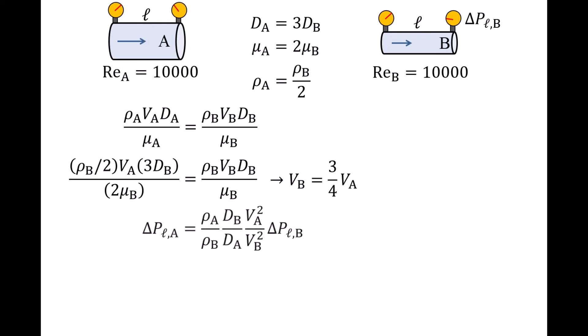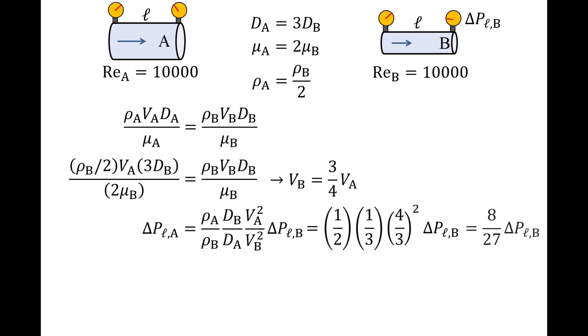Returning to our equation relating the pressure drop per length in both pipes: the ratio of rho A to rho B is one-half, the ratio of dB to dA is one-third, and the ratio of VA to VB is four-thirds. So the pressure drop per length in pipe A would be a factor of 8 over 27 smaller than the pressure drop per length in pipe B. If engineer A wants to predict the pressure drop per length in pipe A at a Reynolds number of 10,000, engineer A can simply ask engineer B to operate pipe B at that Reynolds number, measure the pressure drop per length in pipe B, then multiply that value by 8 over 27. Engineer A does not even need to build pipe A in order to make predictions about how it would behave.